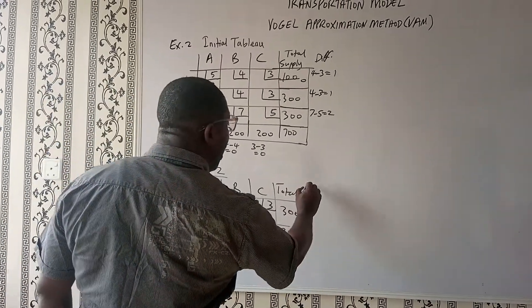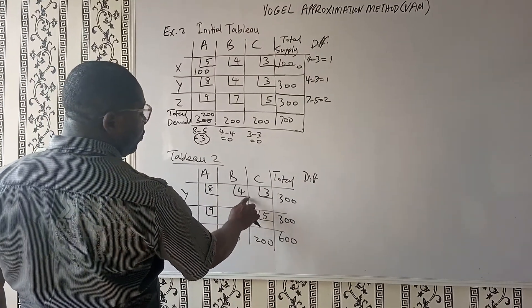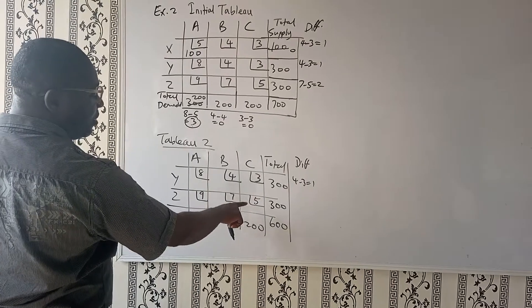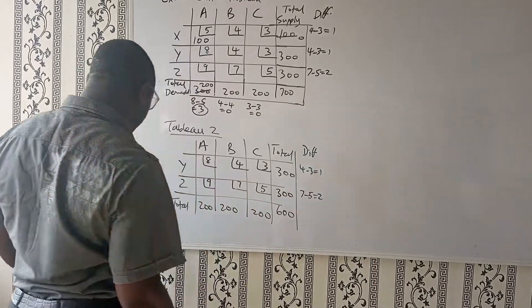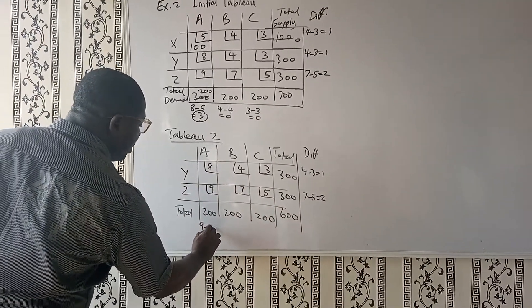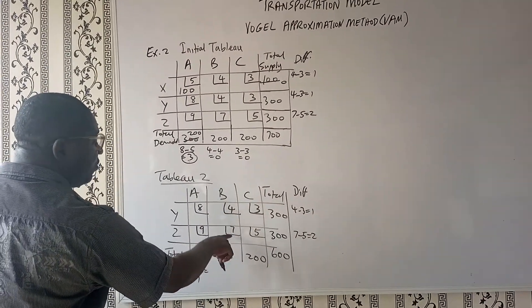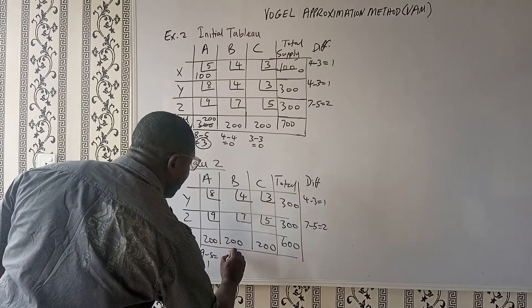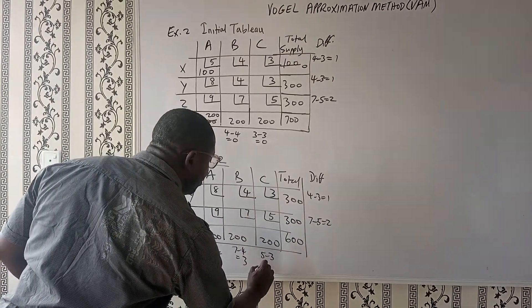The next thing we do is we do our difference again, the difference in the cost. In this case, 3 and 4, so we have 4 minus 3 gives us 1. How about here? 7 and 5, 5 is the least, the next one is 7, so we have 7 minus 5, that gives us 2. The next one is 9 and 8, so we have 9 minus 8, that gives us 1. The next one is, I have 7 and 4, so 7 minus 4 will give us 3. The next one is 5 minus 3, that gives us 2.